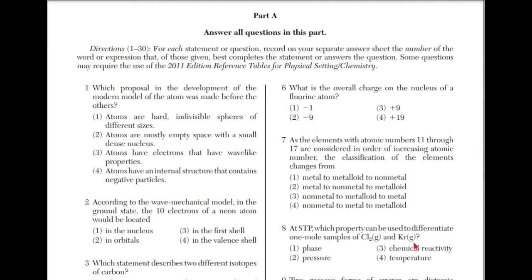Which proposal in the development of the modern model of the atom was made before the others? For this question, you have to remember the atomic theory timeline. Dalton hypothesized that atoms were hard, indivisible spheres.